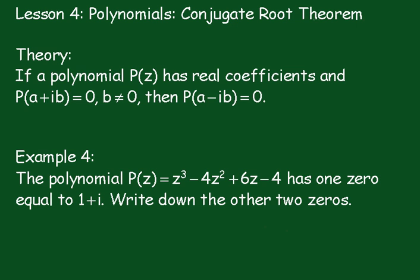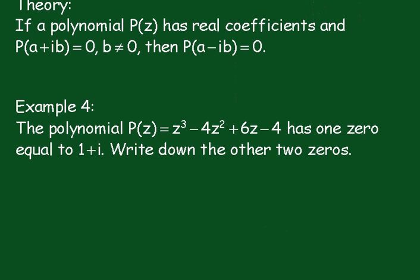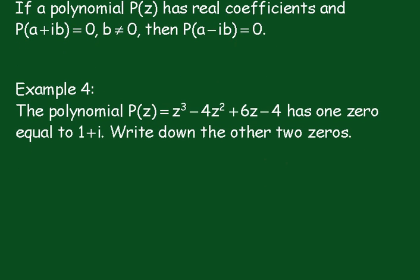Now here is an example of this very important theorem. We have a polynomial P(z) = z³ - 4z² + 6z - 4. All the coefficients are real and it has a zero equal to 1 + i. So if it has a zero equal to 1 + i, then it must have another zero of 1 - i.